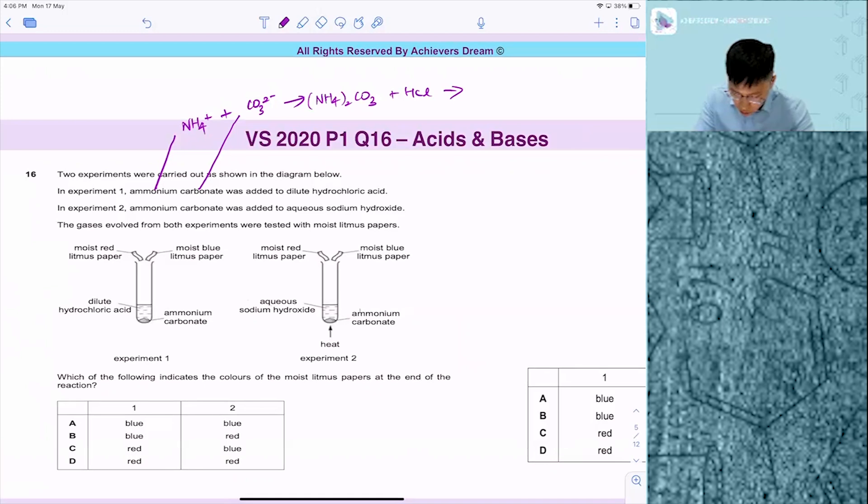You'll get salt NH4Cl plus H2O plus CO2. These are the things that you will get. That's two times two.